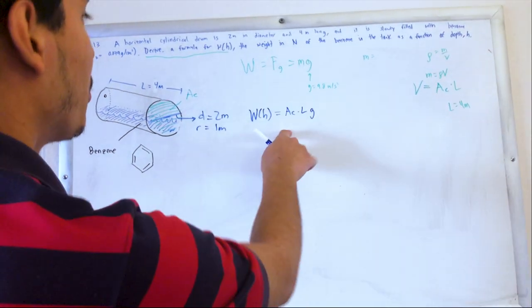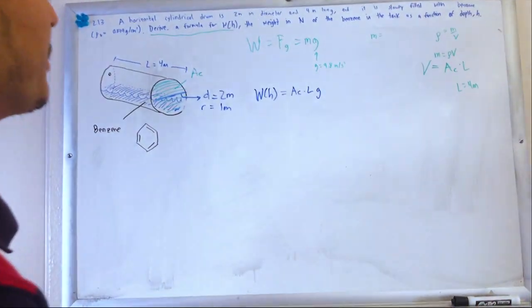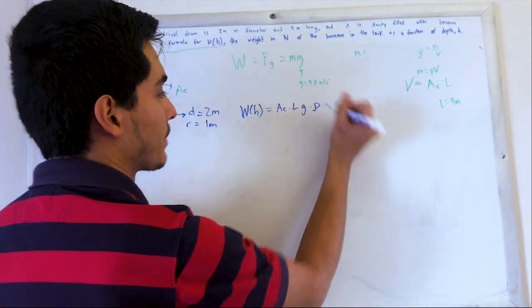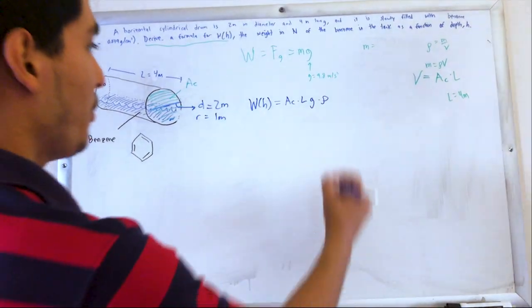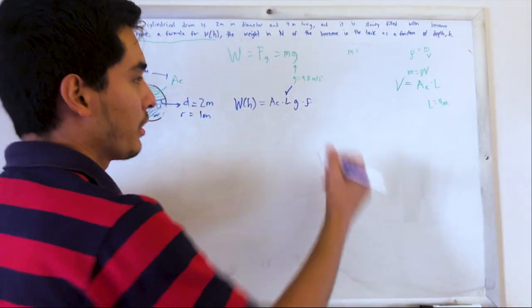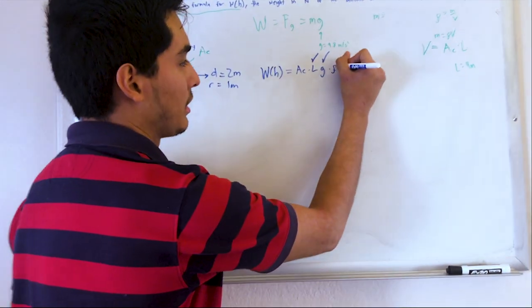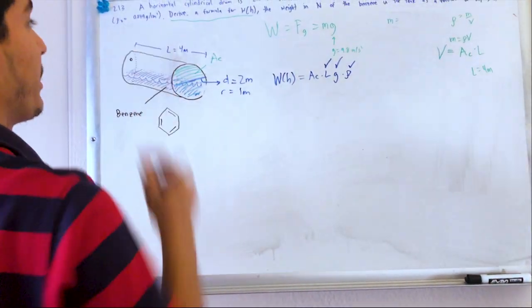Am I forgetting something? rho vg, rho vg, times the density, right there. So we know the length and we know the gravity, 9.8, the length is 4, and we know the density is 0.879.